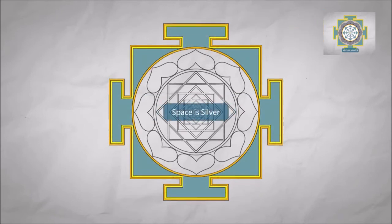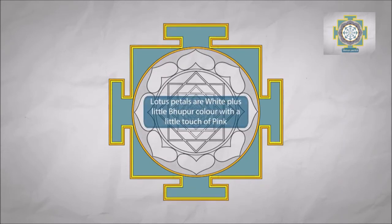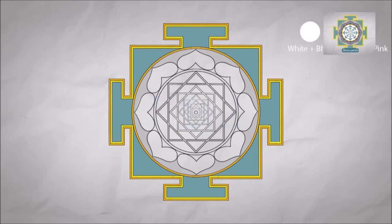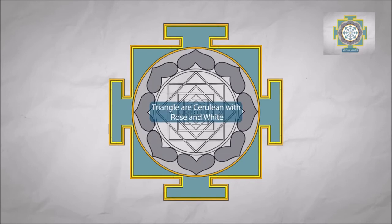Space is silver. Lotus petals are white plus a little Bhupur color with a little touch of pink. Triangles are cerulean with rose and white.